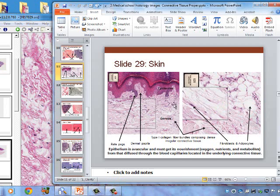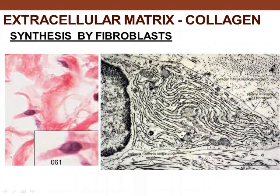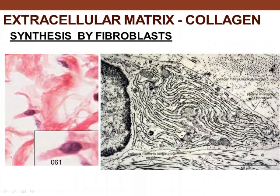Looking at the extracellular matrix at higher power, we see a fibroblast with a euchromatic nucleus that is actively producing collagen — evident from the abundant rough endoplasmic reticulum. The collagen bundles produced by these fibroblast cells are visible as clusters of bundles in the extracellular matrix.